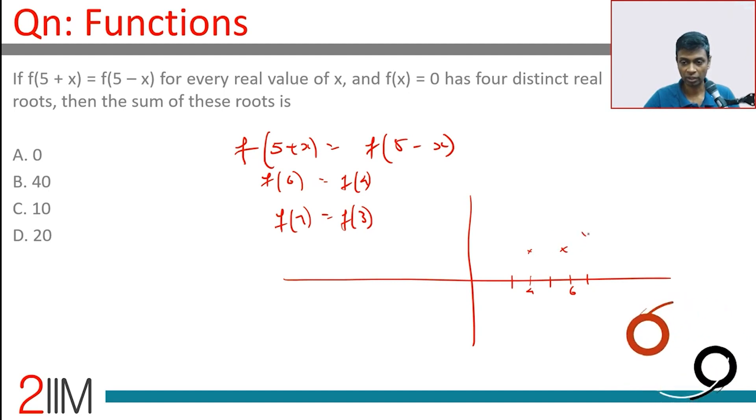If f of 6 were here, f of 4 would be here. f of 7 were here, f of 3 would be here. Whatever value in between, it will be like that. So some curve like this, some curve like this, some curve like this.